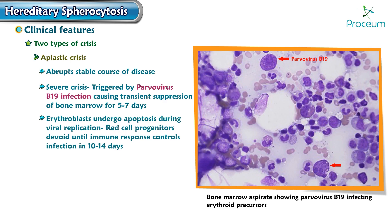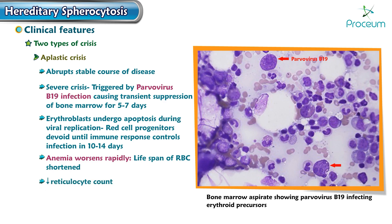Erythroblasts undergo apoptosis during viral replication, leading to depletion of red blood cell progenitors until the immune response controls the infection in 10 to 14 days. Anemia worsens rapidly, though red blood cell production ceases for only a few days, because the RBC lifespan is already shortened in hereditary spherocytosis. A decreased reticulocyte count in a known case of hereditary spherocytosis is a typical feature of aplastic crisis caused by parvovirus B19 infection.